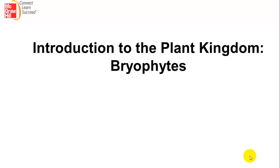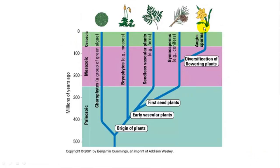Now we're getting into the diversity of plants. We're going to start at the most primitive form of plants, which is the bryophytes. When we look at the phylogeny of modern day plants, we talked last time about carophytes, which are an algal relative of a common descendant of plants. Then we have the bryophytes, ferns and relatives, then seeded plants — gymnosperms — and finally the angiosperms, which are flowering plants.